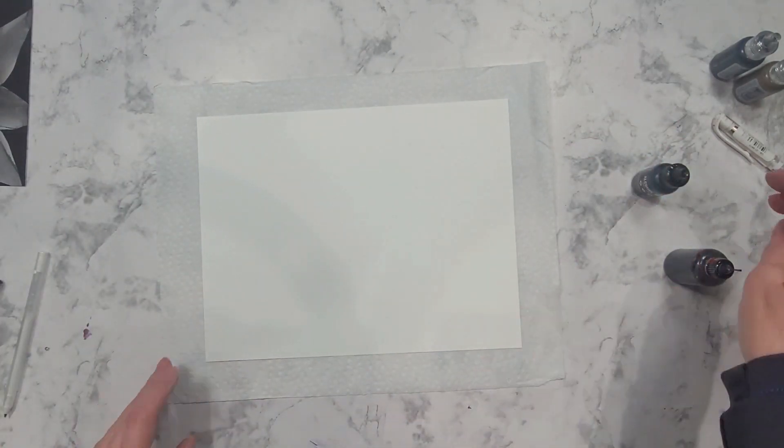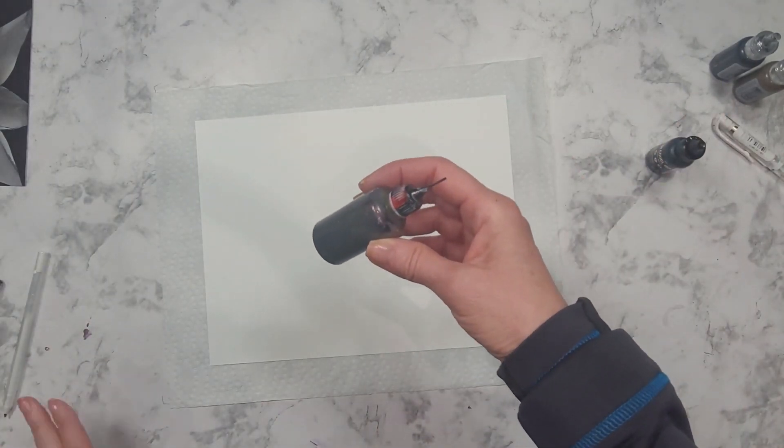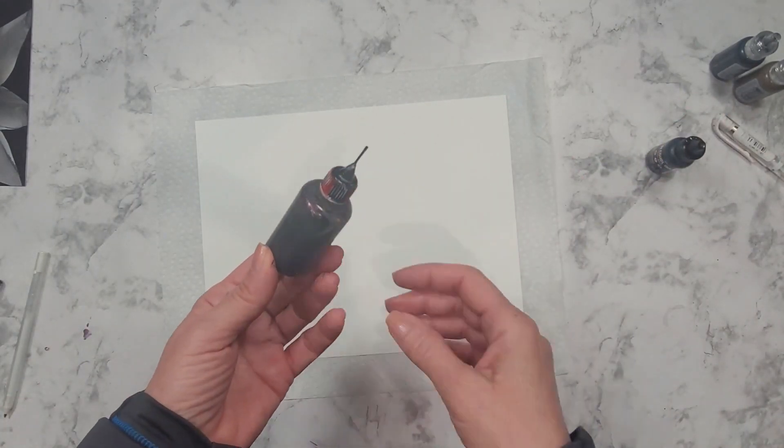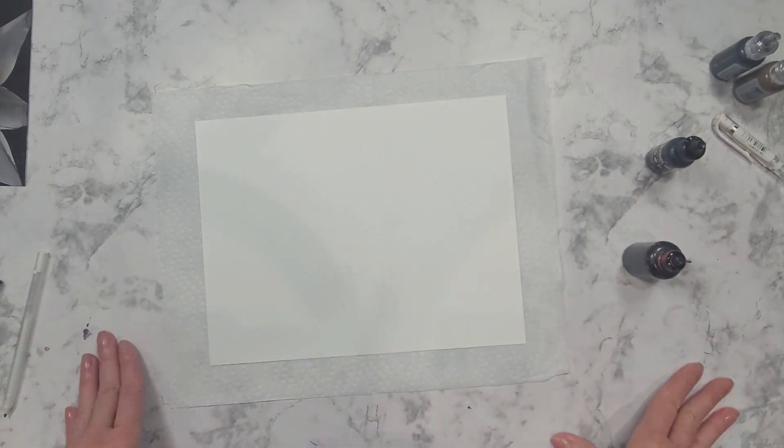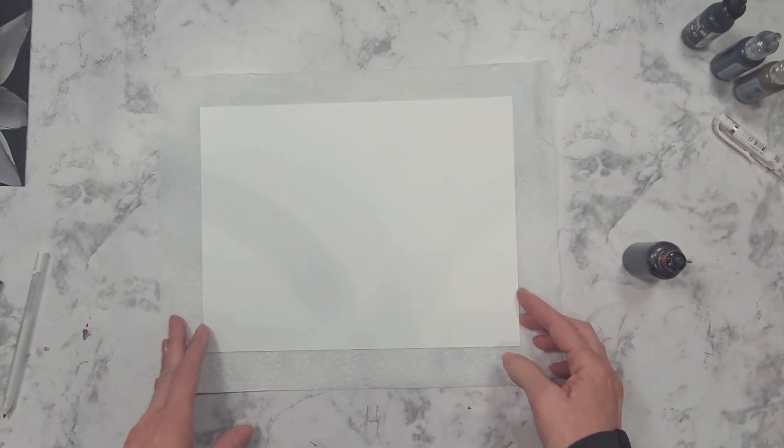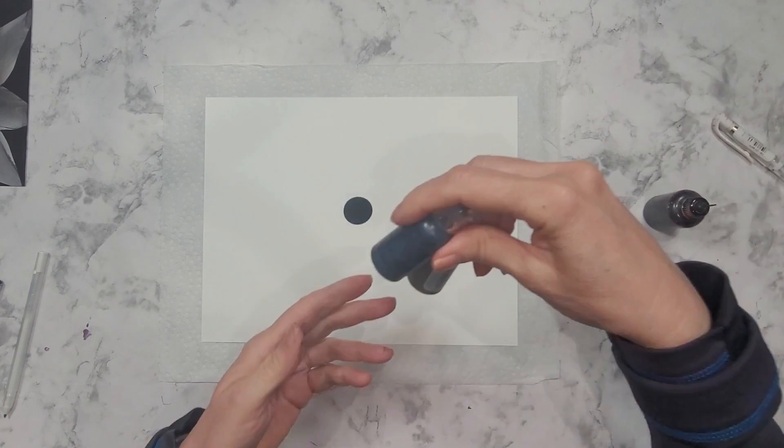You're going to need pitch black, photo paper, some Posca pens, and in this bottle I have a mixture of alcohol and pitch black. I can't tell you exactly how much alcohol to ink I have in the bottle. If I find it too dark I add more alcohol, and if I find it too light I add more ink.